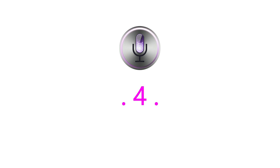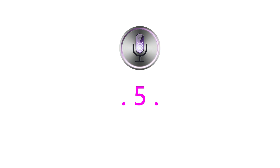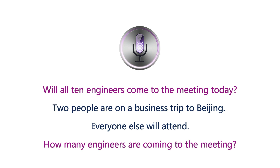Conversation 4 (third play): 你怎么回家？出租车都停在五号门，机场有地铁二号线。我和你一起去坐地铁。Question: 你的要做什么？Conversation 5 (third play): 今天十个工程师都来开会吗？两个人去北京出差了，别的人都会参加。Question: 几个工程师来开会？